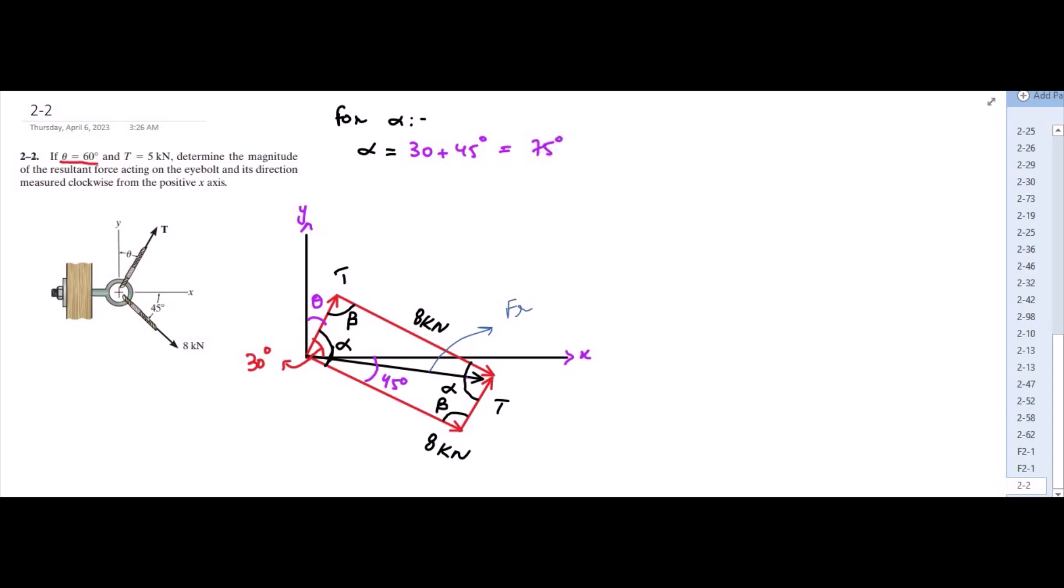Now for beta, we know that the sum of the interior angles of a quadrilateral is equal to 360 degrees. So from here, we know that beta is equal to 360 degrees minus 2 times alpha divided by 2. So beta is equal to 105 degrees.